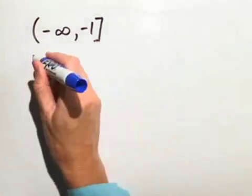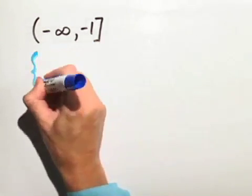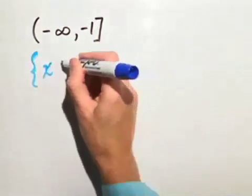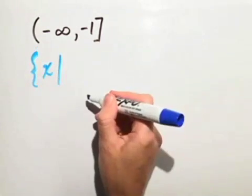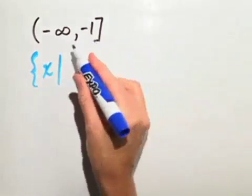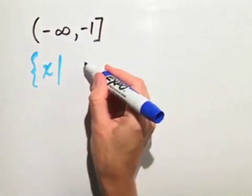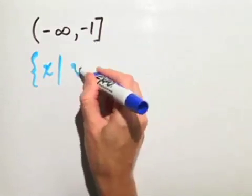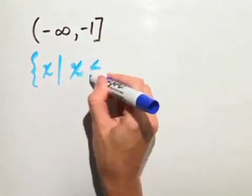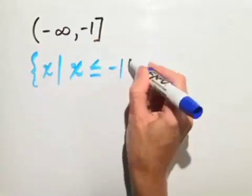So in order to write it in set builder notation, we write the set of all x such that we want numbers to the left of negative 1 and including negative 1. So we simply say x is less than or equal to negative 1.